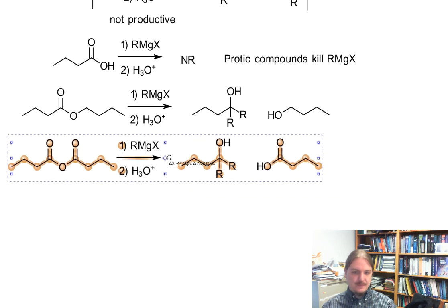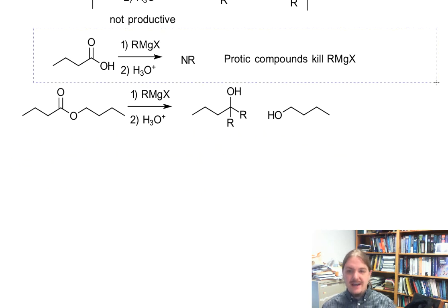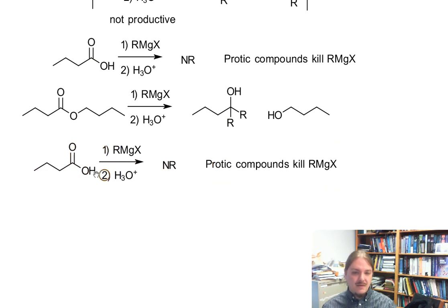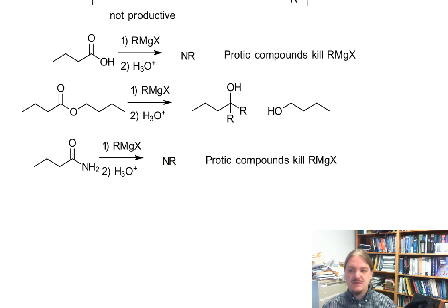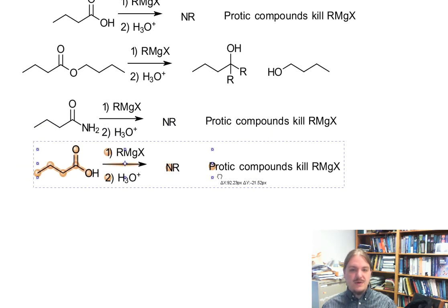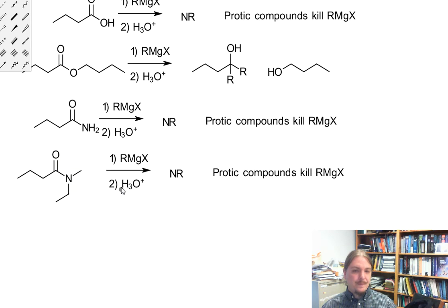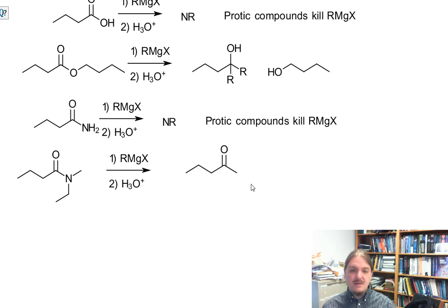Once we're in amides again, if you have an amide with an NH bond it's protic so it's going to destroy the Grignard reagent. But if that amide has no NH bonds, then we have the opportunity for the Grignard reagent to react with that amide to form a hemi-aminal kind of intermediate which decomposes to give the ketone, and the amine is left over as a byproduct.